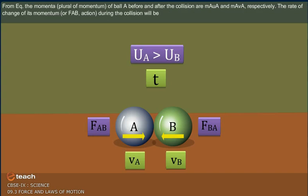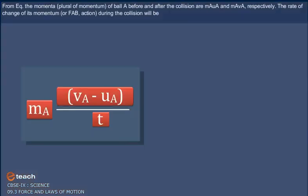Suppose VA and VB are the velocities of two balls A and B after the collision respectively. The momenta of ball A before and after the collision are MA UA and MA VA respectively. The rate of change of its momentum, FAB action, during the collision will be MA(VA minus UA) divided by t.